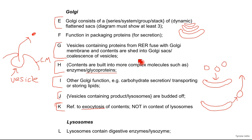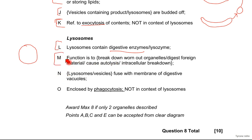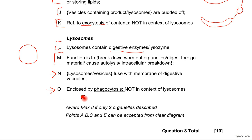The lysosomes contain digestive enzymes. In terms of their structure, they're nothing too complex — they're large spherical structures. They function to break down old worn-out organelles. Point O relates to phagocytosis, which will be covered in the cell membrane section, so you may not have got that. Point N, about digestive vacuoles, is also one that wouldn't have been covered yet, and phagocytosis will be done in cell membrane transport.